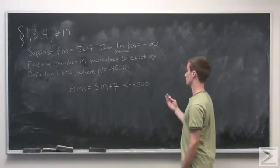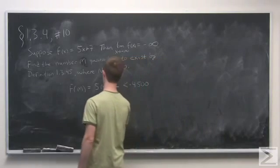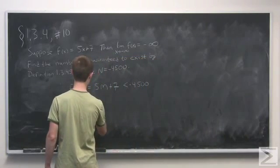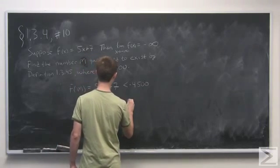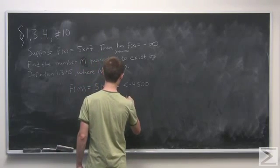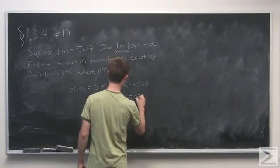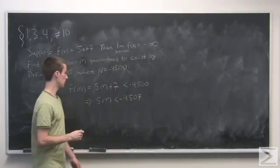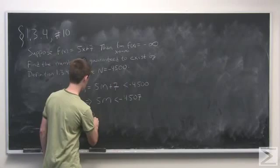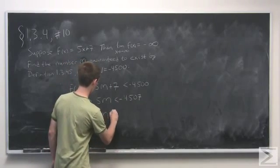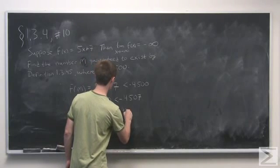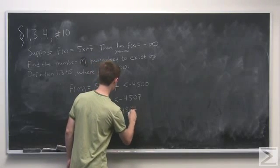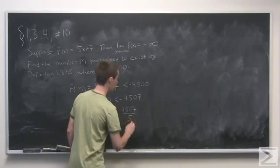Now, this is going to be true exactly when 5m is less than negative 4507. Dividing both sides by 5, we have m is less than negative 4507 over 5.